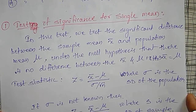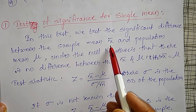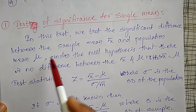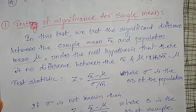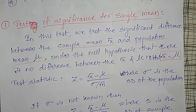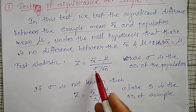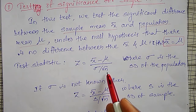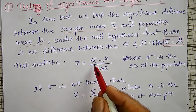In the test of significance for a single mean, we test the significant difference between the sample mean x-bar and the population mean mu. Under the null hypothesis, there is no significant difference between x-bar and mu. The test statistic is Z = (x-bar − mu) / (sigma / √n), where sigma is the standard deviation of the population and sigma/√n gives the standard deviation of the sample.